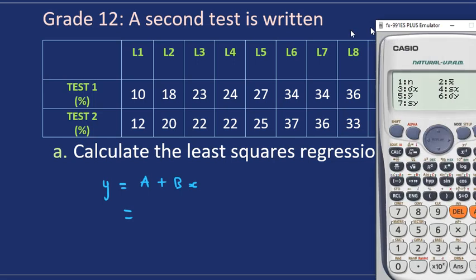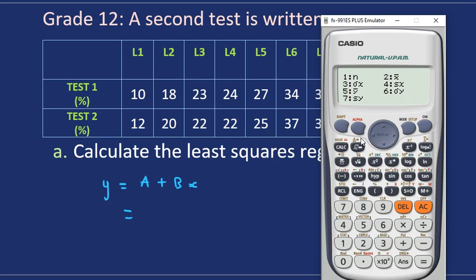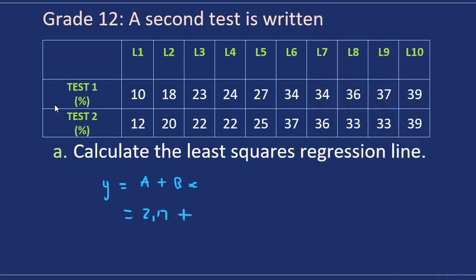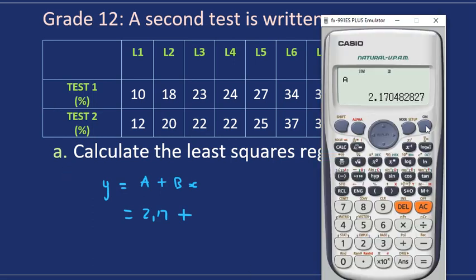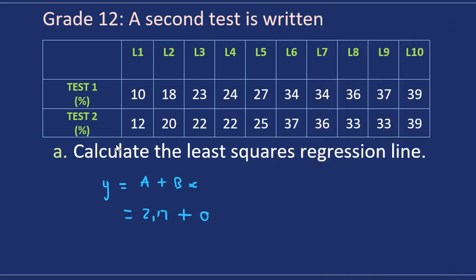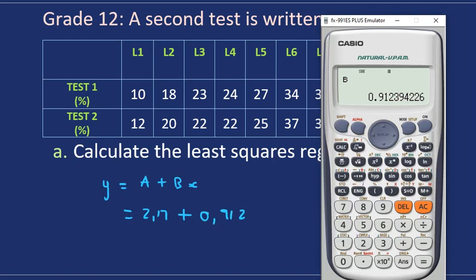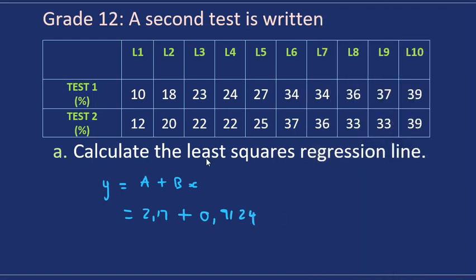We would first select, going again in stats, select number five, the regression this time. And of course a would be - shift mode - and not the variance but the regression we must select to get the regression line equation. And b, so let's select two. So b will be 0.9124. Just for accuracy we could select four decimals. That is our regression line.